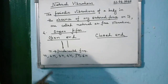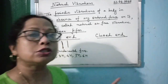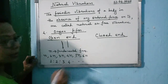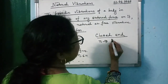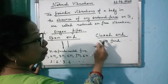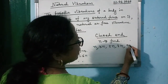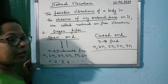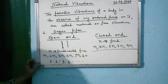So if asked about the frequencies in an open-end organ pipe, the ratio of frequencies is 1:2:3:4:5 and so on. In the case of a closed-end organ pipe, if N is the fundamental frequency, the frequencies present are N, 3N, 5N, 7N, 9N — that is, only the odd multiples of the fundamental frequency. In the open-end pipe, both even and odd multiples are present.